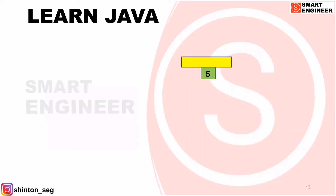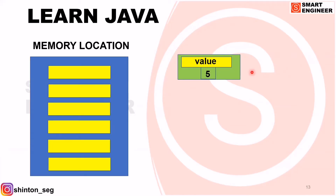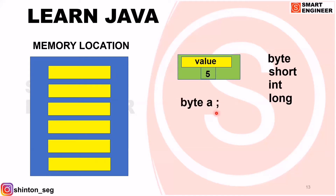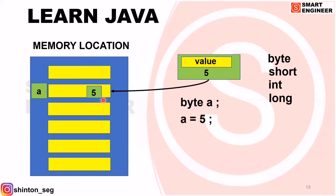Now we can learn with an example. Suppose I have the number 5 — that is my value — and I need to store this number in a memory location. For storing numbers, the data types are byte, short, int, and long. In this example, we can use the data type byte. I'm going to write 'byte A', naming a memory location as A, with data type byte so it can store a number. Now I'm going to write A equal to 5, meaning I'm storing the number 5 in variable A.